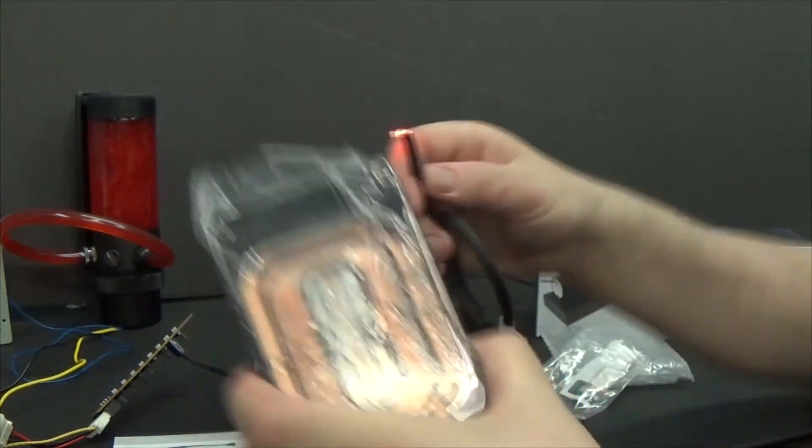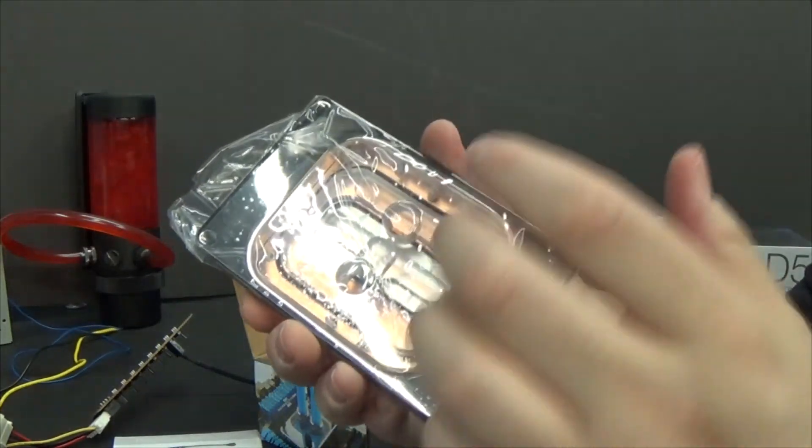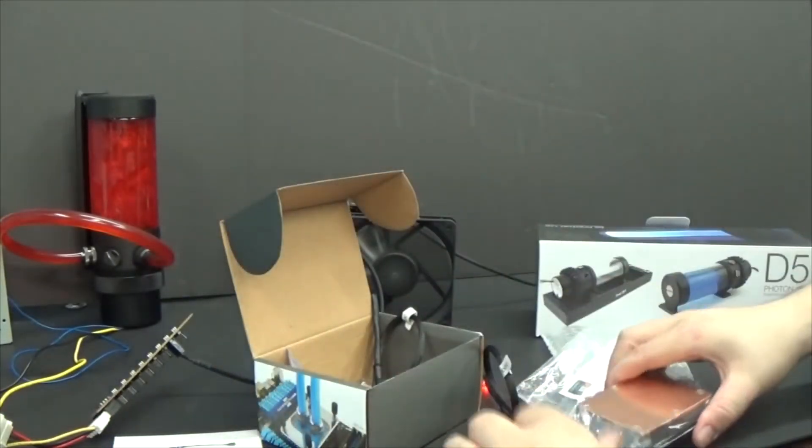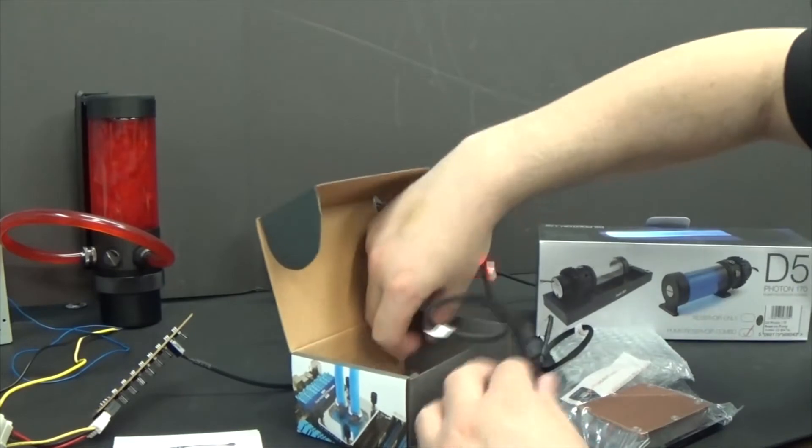So yeah, you're going to get two of those. They're each going to go into the side of the block. If you're using something like a UV green coolant, putting the blue RGB will really kind of make that glow and pop. Second one.